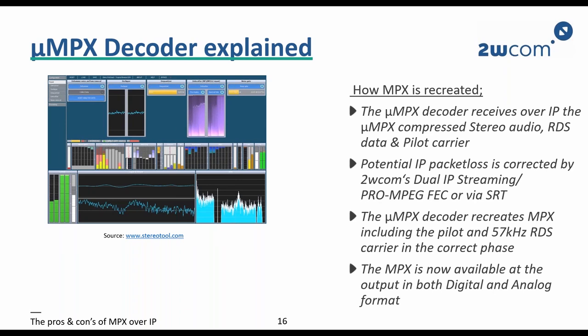The 19 kHz carrier is necessary to lock the audio and the 57 kHz RDS carrier to the correct phase. The decoder also restores audio processing as explained previously. This is the only way to recreate an MPX output which is exactly the same across all micro-MPX decoders. Once the micro-MPX decoder has restored the original MPX, it can be connected to the transmitter.